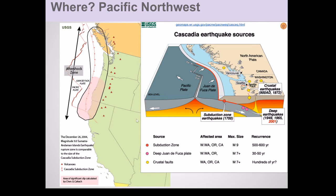A North American example of this same scenario is where the small Juan de Fuca plate is being subducted under the Pacific Northwest, creating all of the majestic mountains known in Washington State and Oregon, including Mount Hood, Mount St. Helens, and Mount Rainier, and a number of other major mountains in the area. As this plate subducts, it creates these volcanoes and the earthquakes experienced in the area.